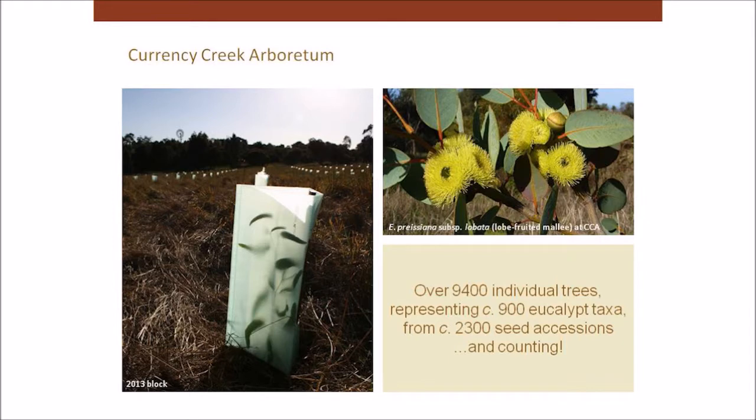Where am I at with Currency Creek Arboretum? Over the last 20 years I've planted about 9,400 trees on the site, representing about 900 eucalypt taxa. I've at least tried to grow between 90 and 95% of all the known eucalypt species and subspecies. Some of the tropical species won't grow too well there because it's relatively cold in winter, and some of the high rainfall ones struggle in summer. I'm still putting in more trees each year, although the blocks are getting smaller because other projects are taking me away from field work, and also because there's literally less space on the property.